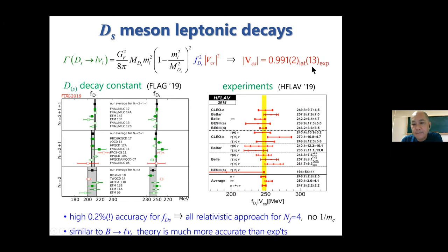Comparing this, we obtain Vcs. Here you can see that the theory is much more precise than the experiment, similar to the case of the D meson leptonic decay. Four-flavor relativistic simulation can determine these decay constants with very high accuracy of 0.2 percent.